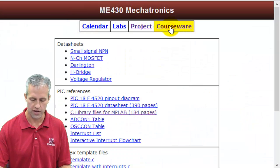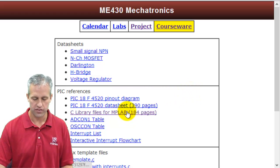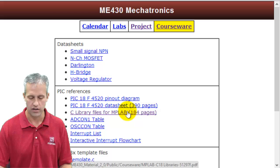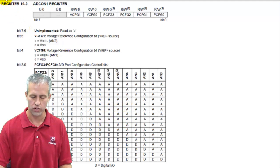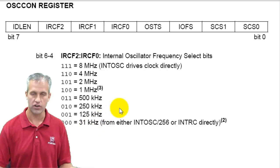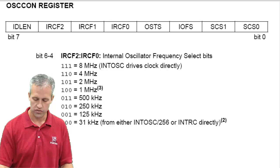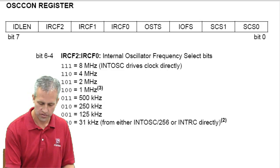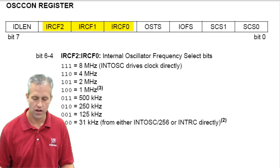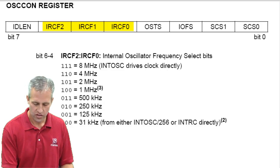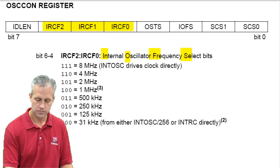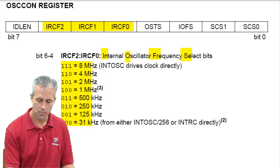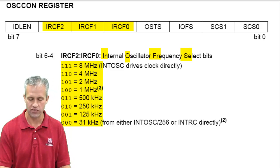There's a lot of good things on the courseware tab. A couple of things in here are this library file — we'll talk about that later, you may as well just save and download it. There are quick links like the ADCON1 register, a quick little table, and then the OSC1 register is also in there. The way this works is there are only three bits that interest us: IRCF1, IRCF2, and IRCF0 — internal oscillator frequency select.